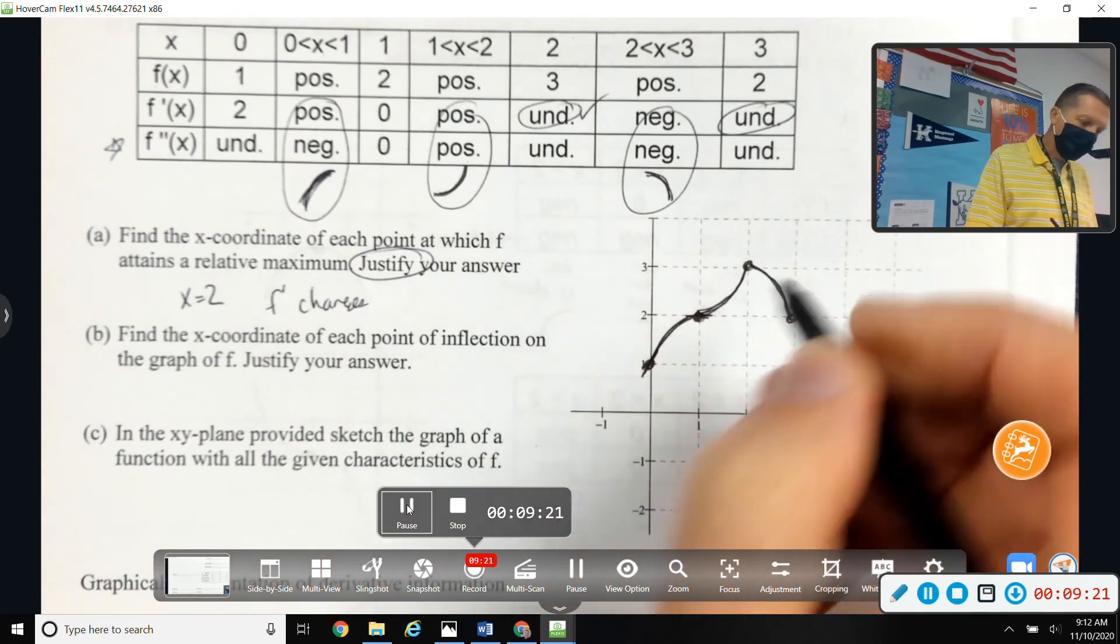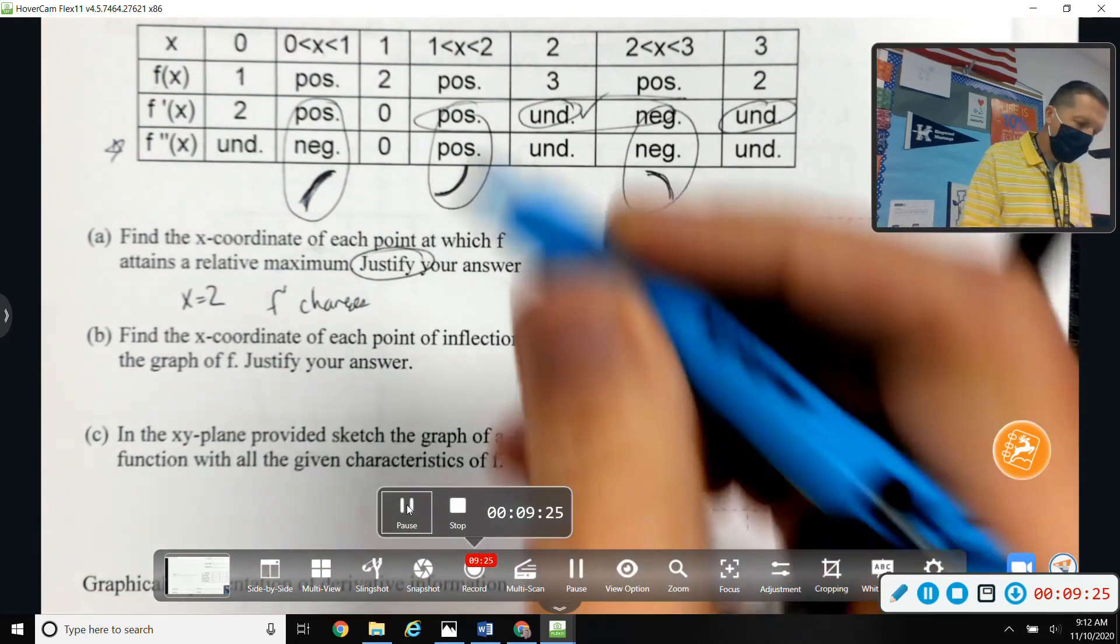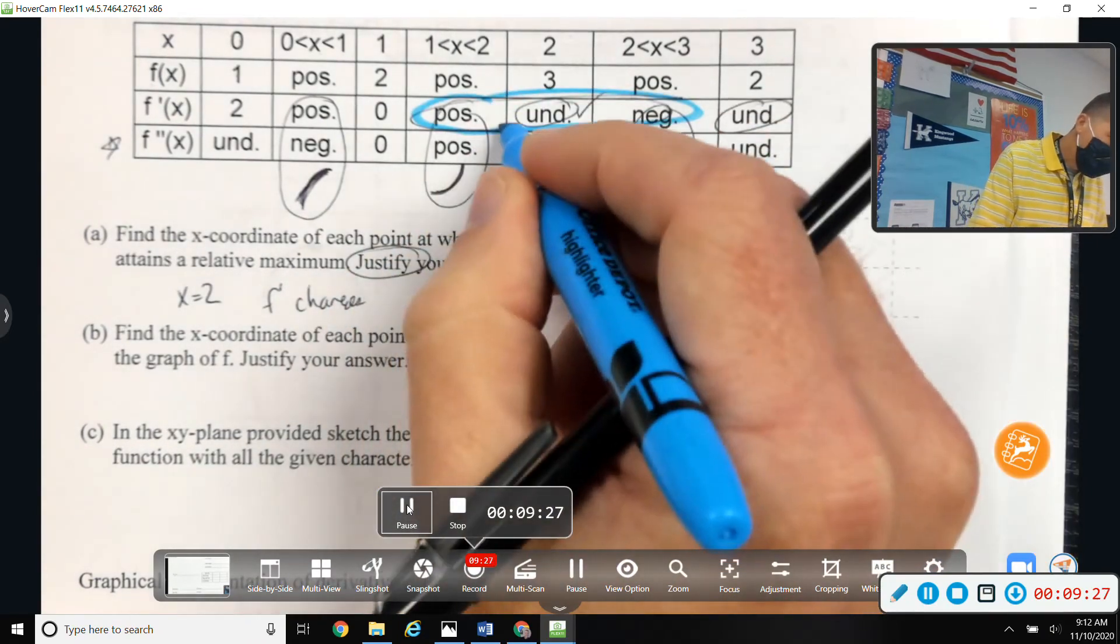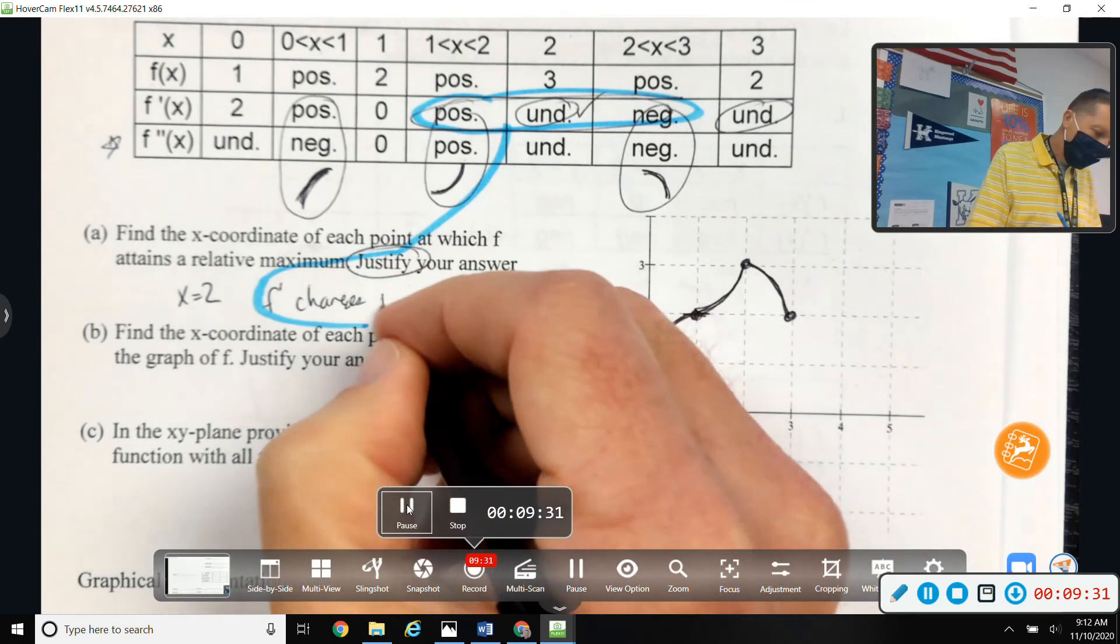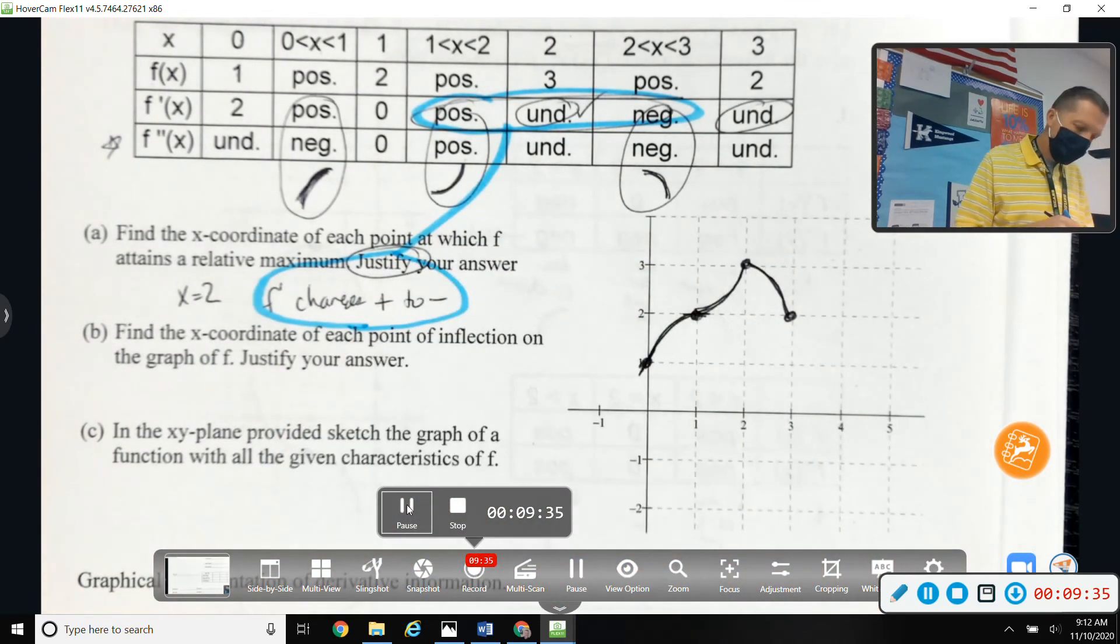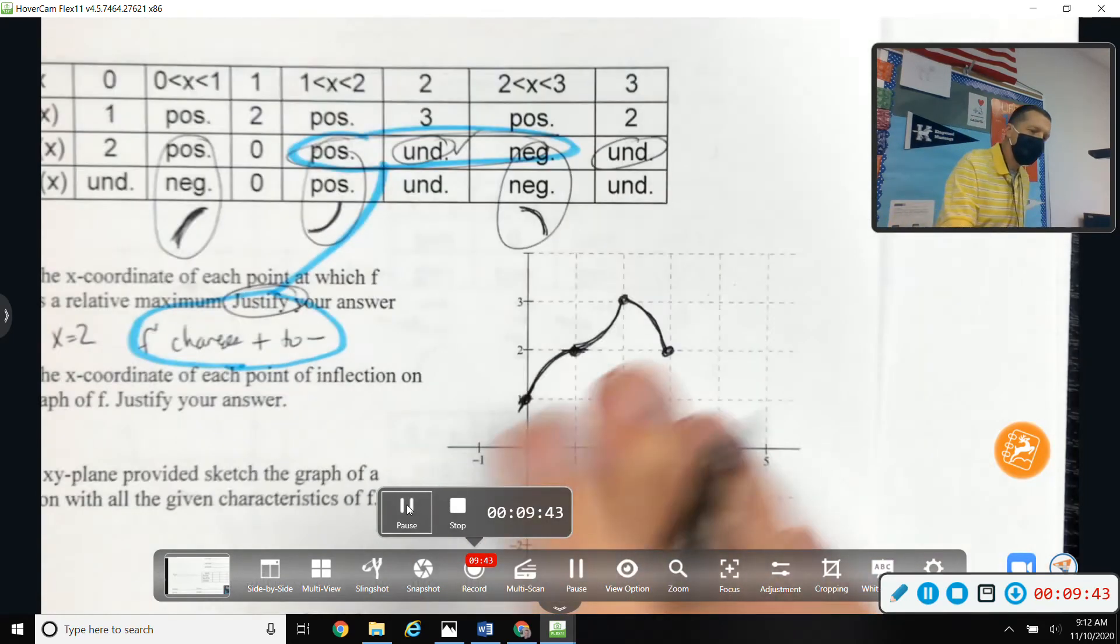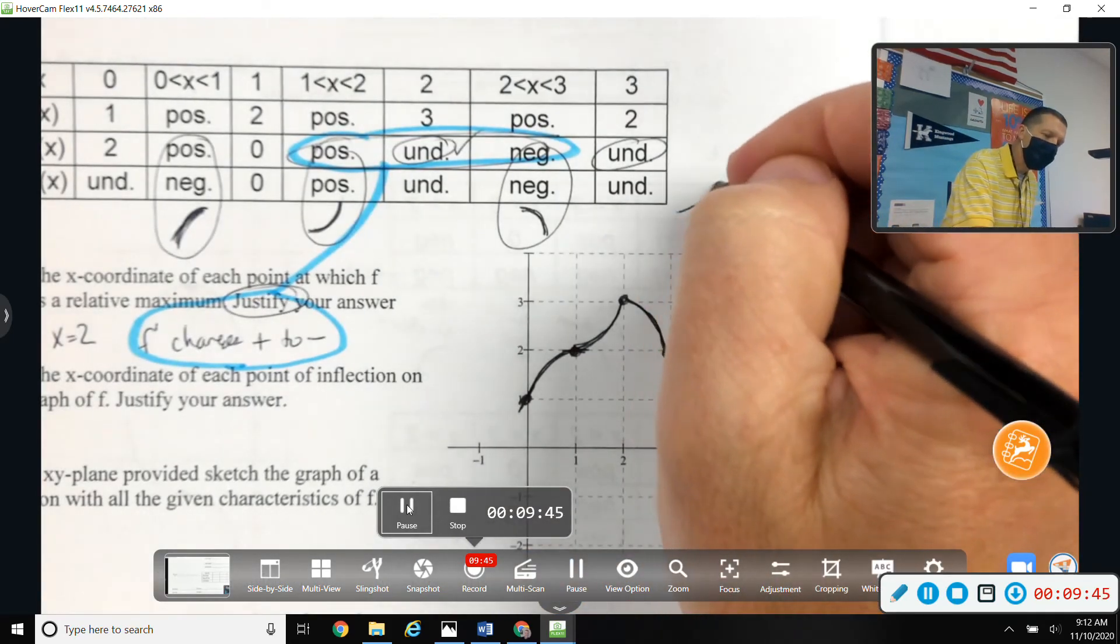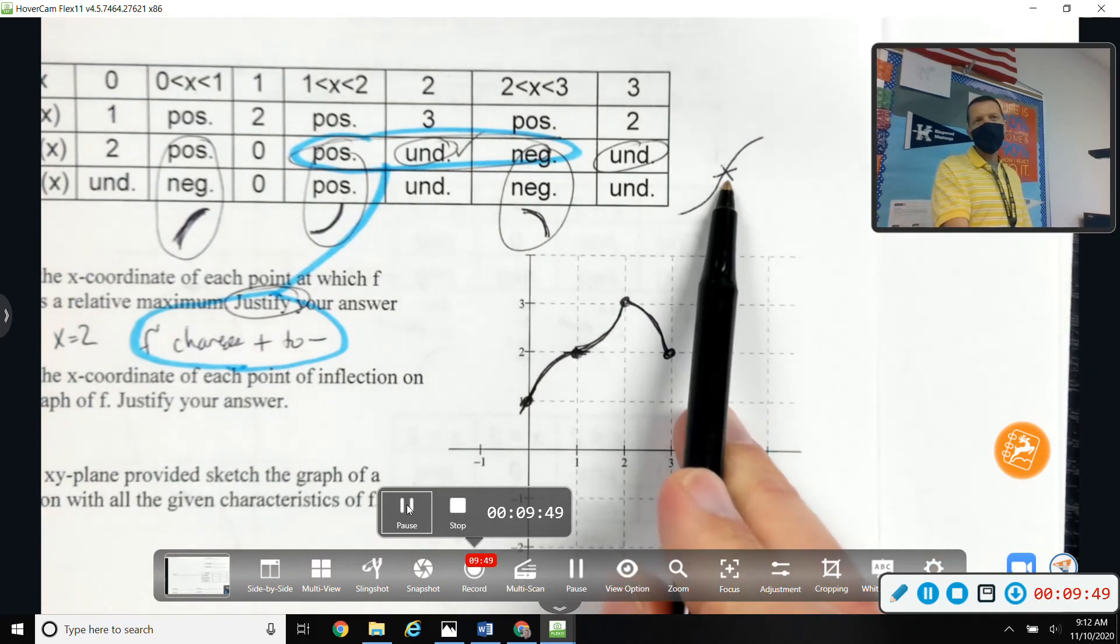Positive to negative. Because concavity could change and there not be a maximum in there. Like that has a concavity change, but there's not a maximum in there.